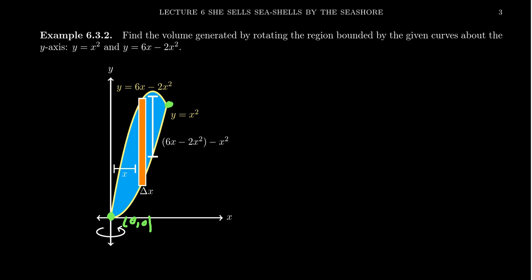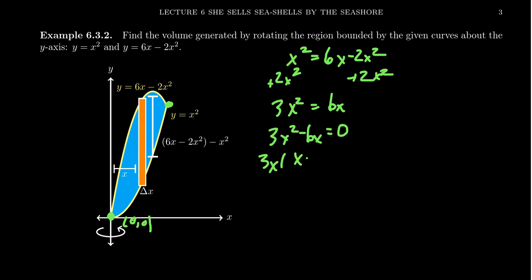Whenever you want to find intersections between these functions, you just set the two functions equal to each other. So y equals x squared and y equals 6x minus 2x squared. Set them equal to each other and solve. We might as well just set everything equal to 0. 3x squared minus 6x equals 0. Factor. You can pull out a common divisor of 3x that leaves behind x minus 2. And so this gives us the two intersections we're looking for, x equals 0 and x equals 2.